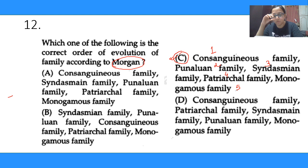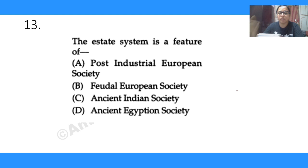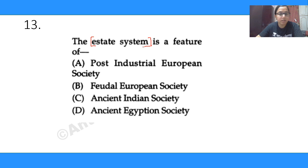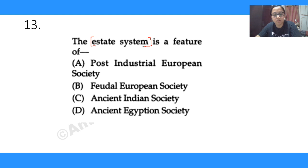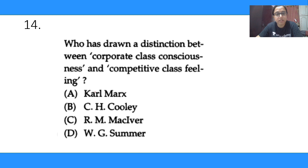Question 13: the estate system is a feature of which type of society? Options are post-industrial European society, feudal European society, ancient Indian society, and ancient Egyptian society. The correct answer is feudal European society. An estate is a key term associated with feudal society.